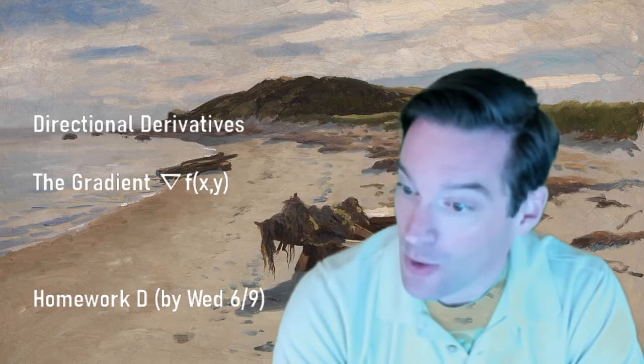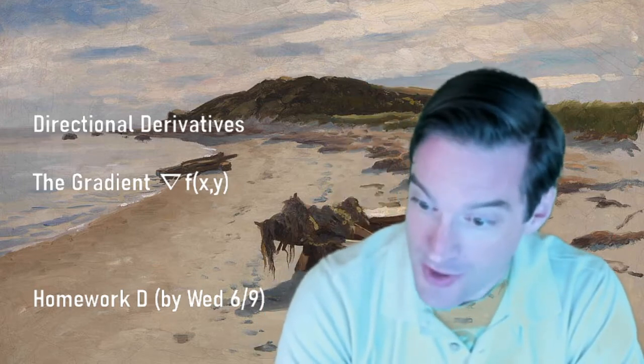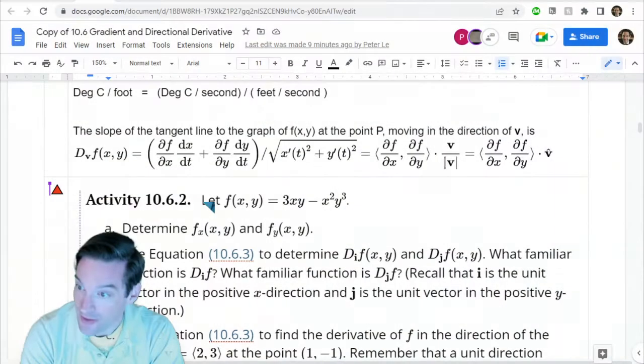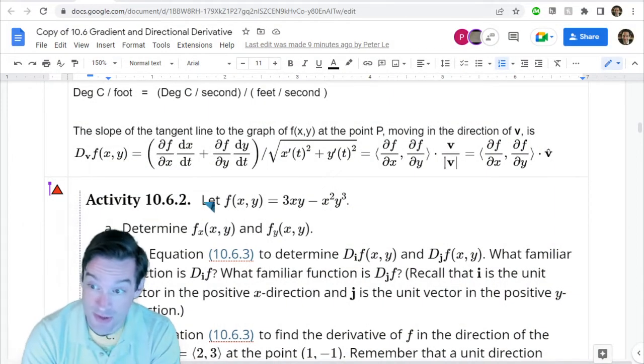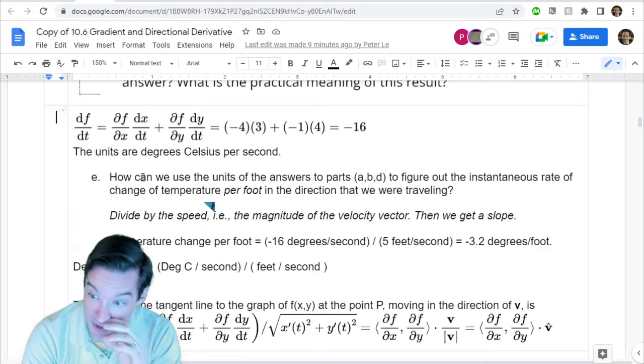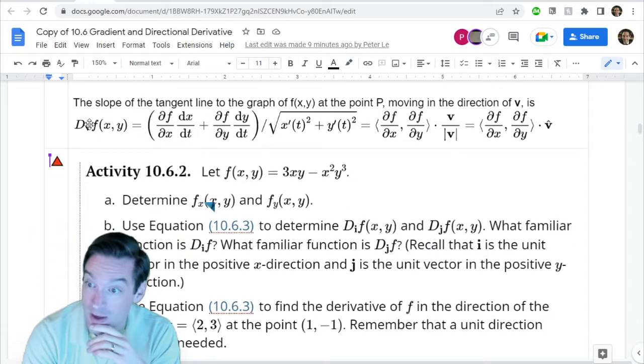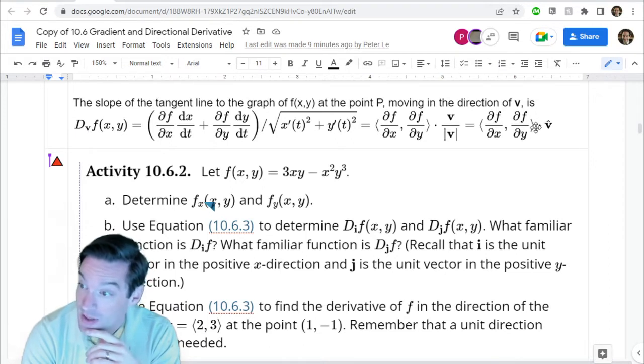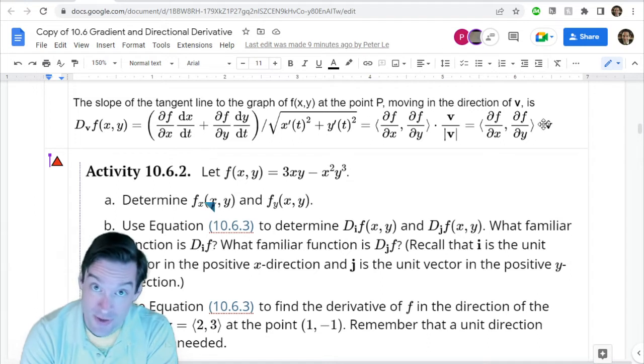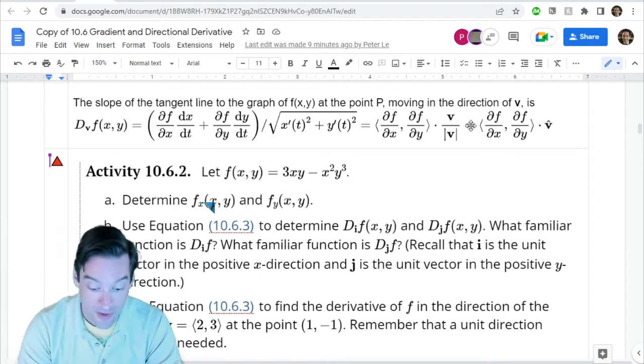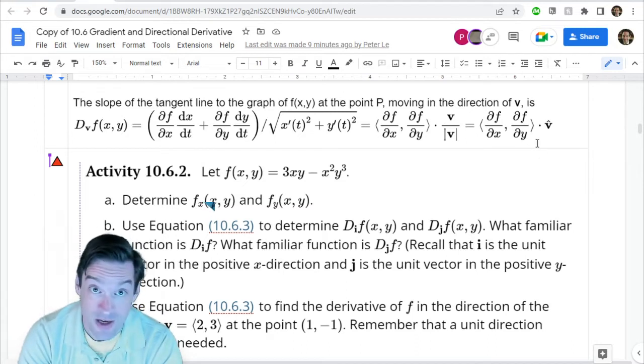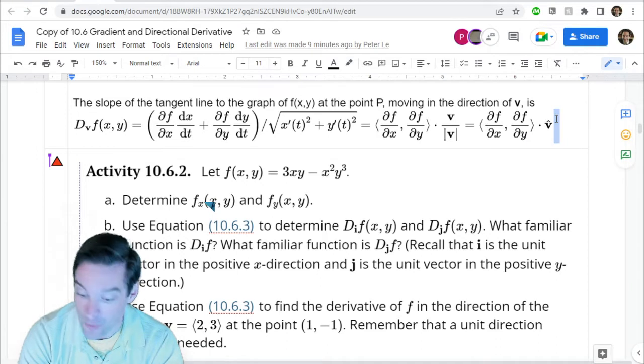We reasoned our way into a formula for a directional derivative that looks like this. So to find a directional derivative, the instantaneous rate of change of a multivariable function f of x and y in the direction of some vector v, what we end up doing is taking a dot product of a unit vector in the v direction with this vector whose components are the partial derivatives of f with respect to x in the x component and with respect to y in the y component.